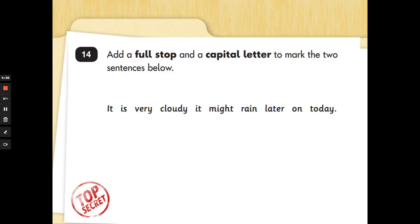Number 14. Add a full stop and a capital letter to mark the two sentences below. So at first glance, it looks like one big sentence. But there are actually two statements here, two different facts. Let me read them to you and listen very carefully. It is very cloudy. It might rain later on today. What was the first thing I told you? That's right. It is very cloudy. Then the second statement was it might rain later on today. Look at the green sentence. It is very cloudy. It's got a capital letter. What do we need to add in? That's right. A full stop. Look at the yellow statement. It might rain later on today. It's got a full stop. I didn't remember my capital letter. Well done. Fantastic work.